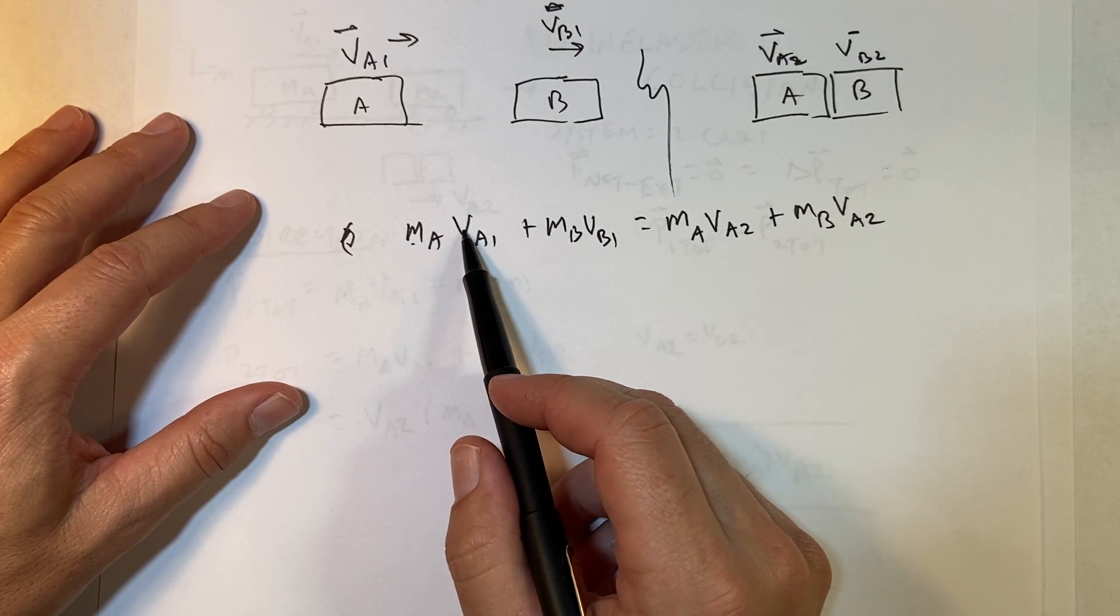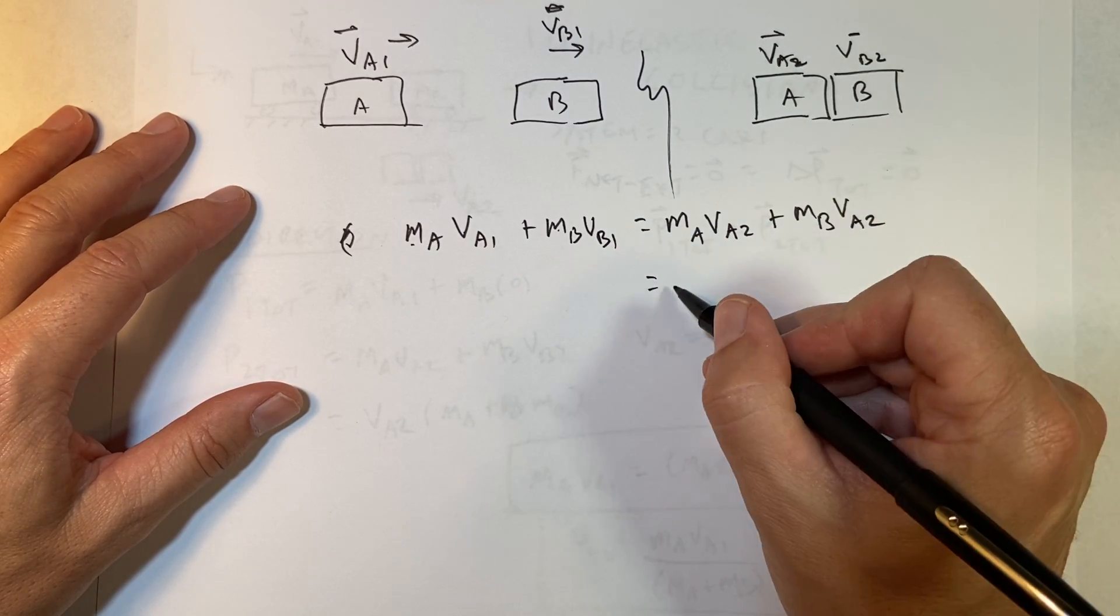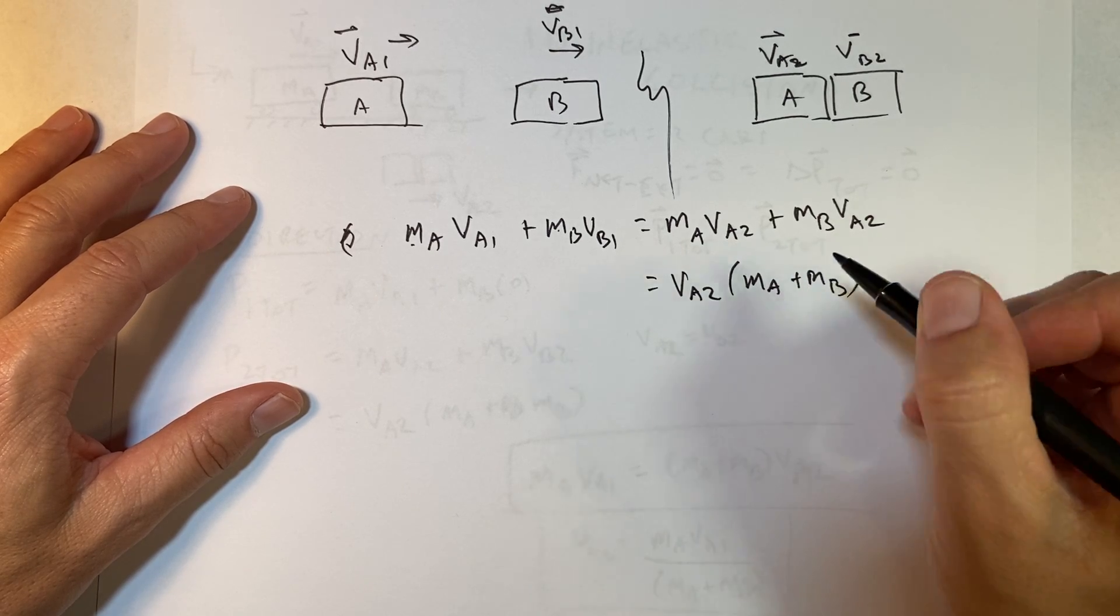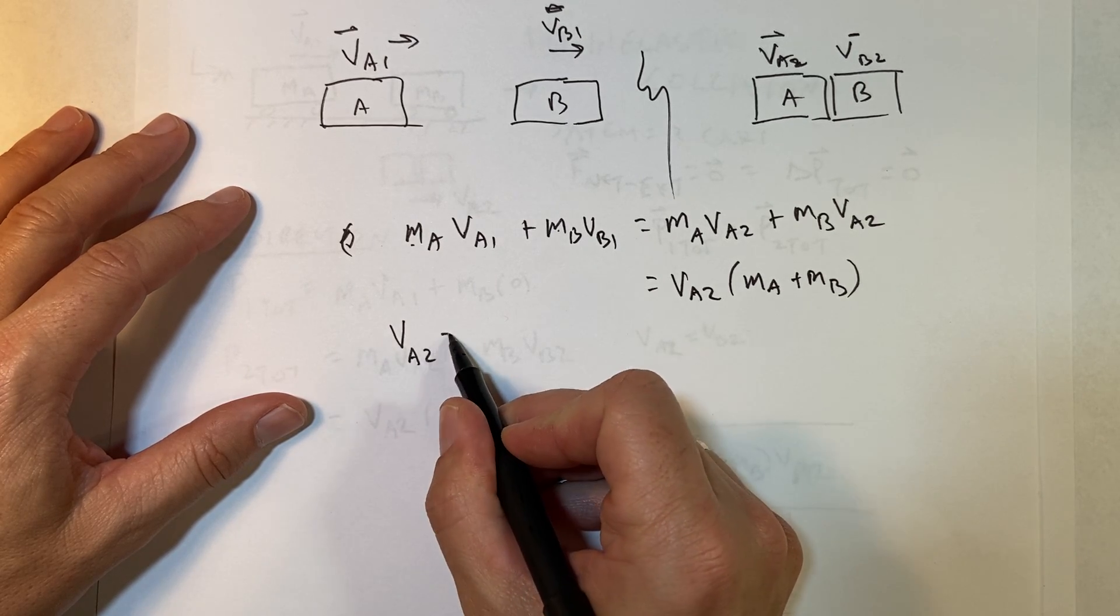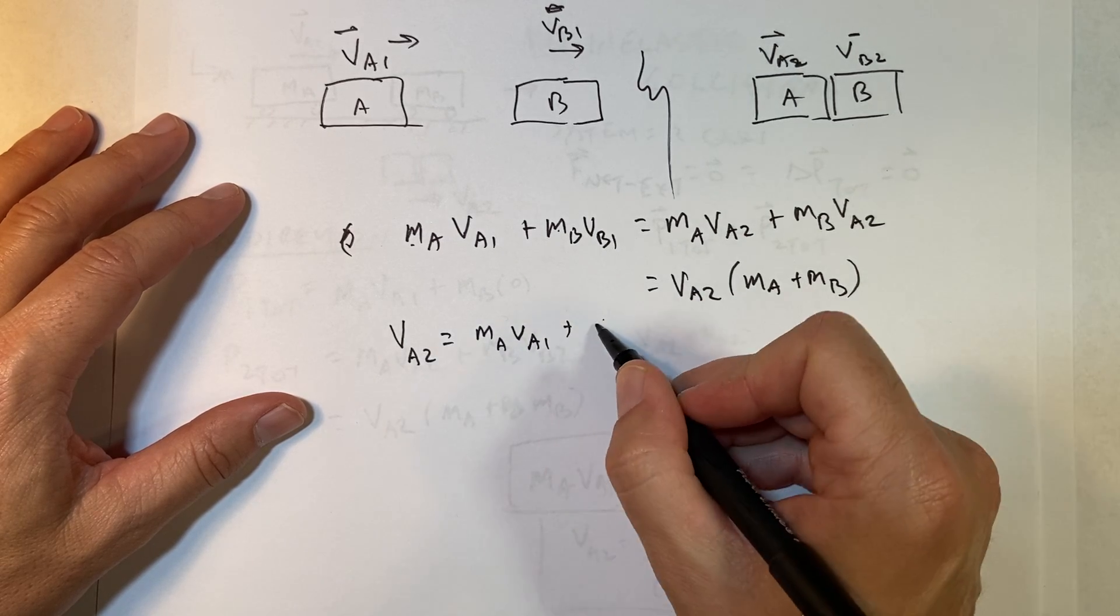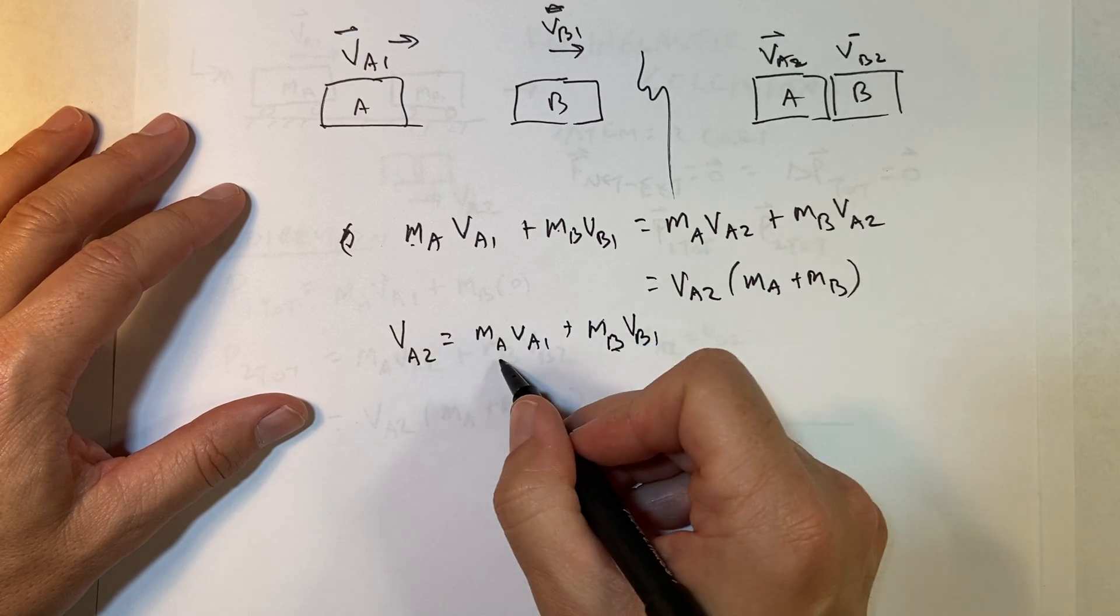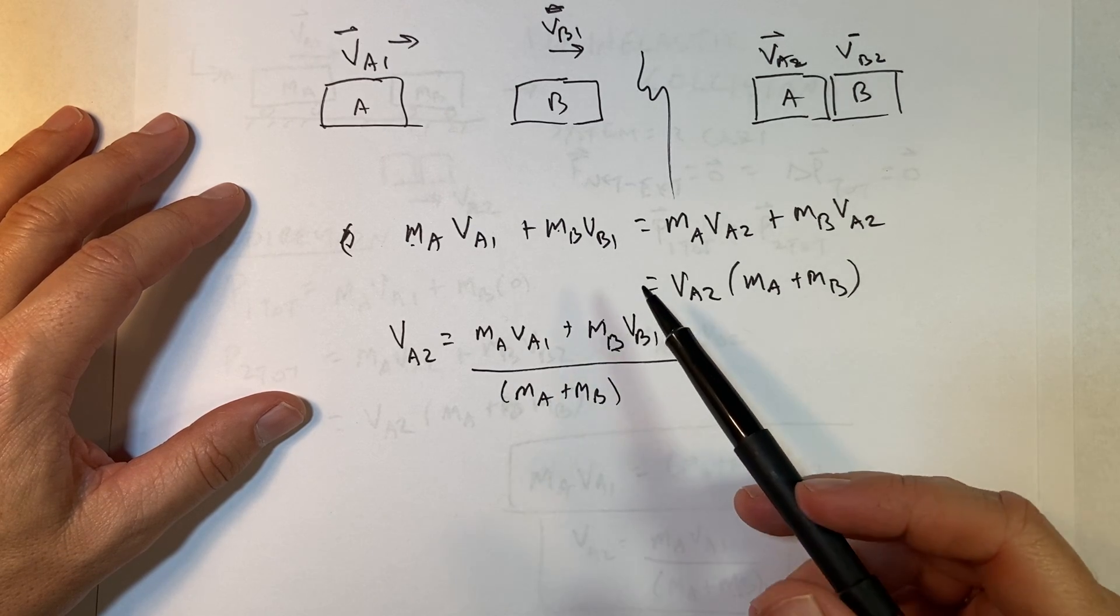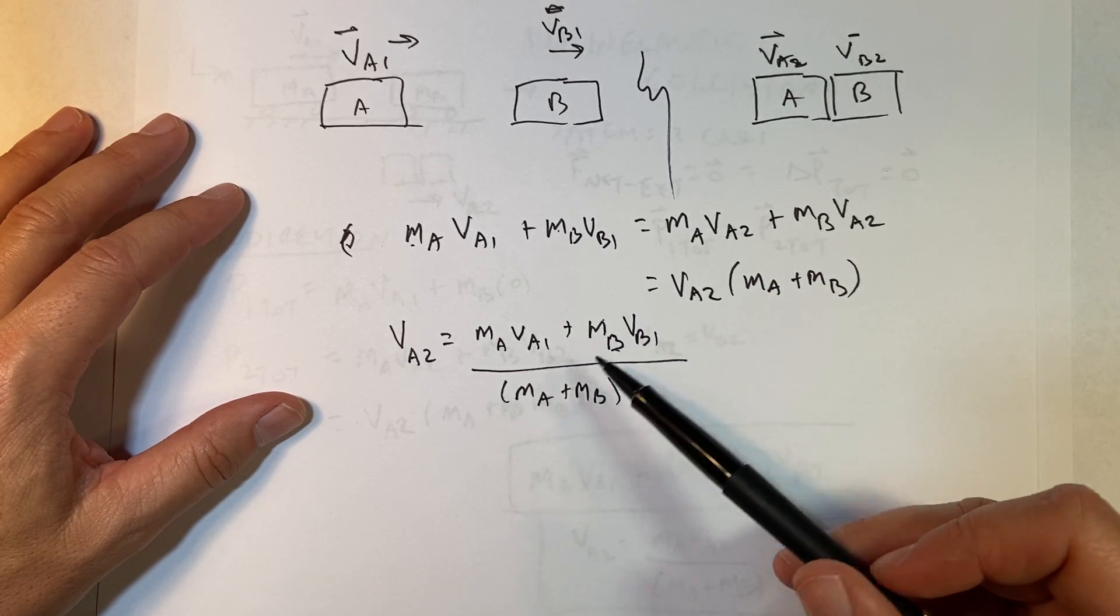But I'm going to write this as v_A2. So assuming I know all these values as initial velocities, I can find the final velocity v_A2. So let's just factor out the v_A2, m_A plus m_B, and then I'm going to divide both sides by this. I get v_A2 equals m_A v_A1 plus m_B v_B1, all that over m_A plus m_B. Again we can check, this should give me the same answer as before if v_B1 is zero. That whole term, because I do get the same thing.